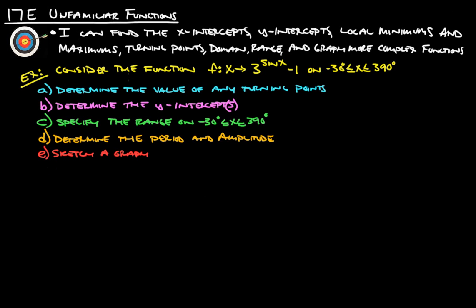Alright, so let's jump straight into an example. And so here is our function. You want to imagine all this here is basically just saying y equals. So we got y equals 3 to the power of sine x minus 1 from negative 30 to 390.